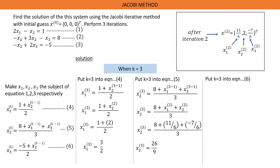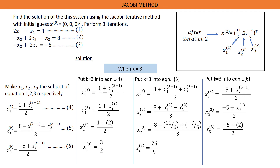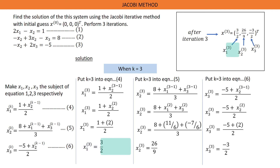Now put K equals 3 into equation 6. Solving this gives S3^(3) equals negative 5 plus S2^(2) all over 2. S2^(2) is 2, so we replace it with 2. Solving this gives S3^(3) equals -3/2. The values of S after iteration 3 are S^(3) equals [3/2, 26/9, -3/2] transpose. That is, S1^(3) = 3/2, S2^(3) = 26/9, and S3^(3) = -3/2.